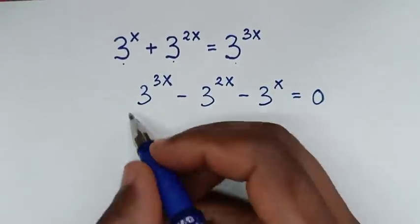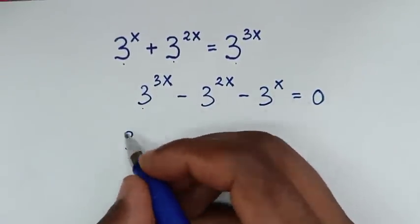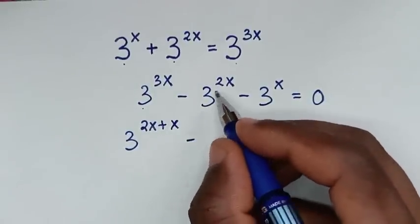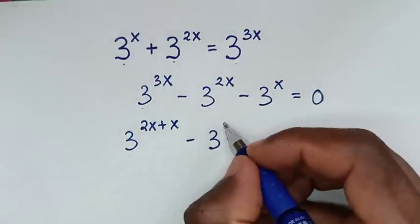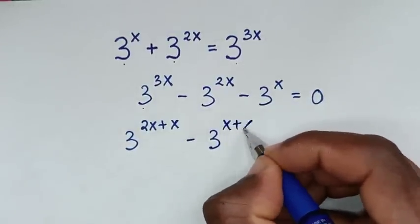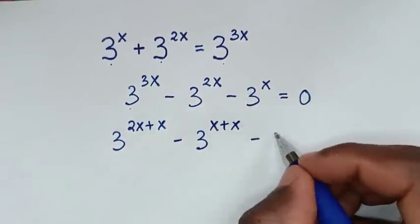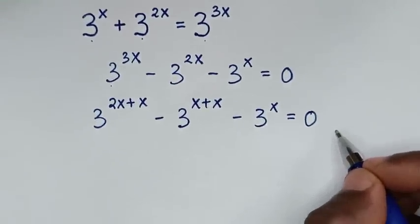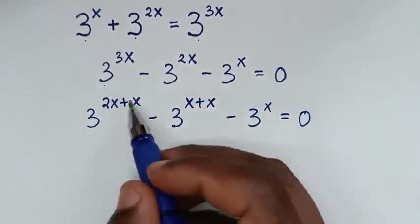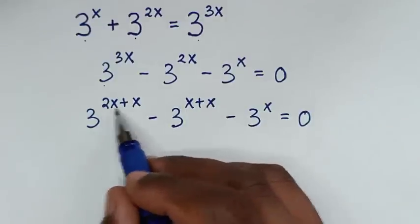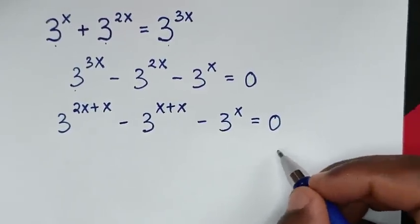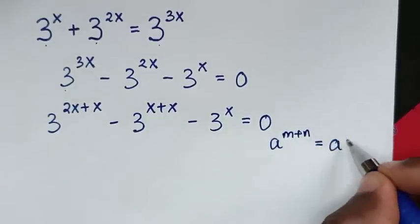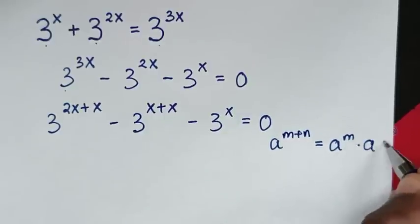In the next step, 3 power of 3x is the same as 3 power of 2x plus x, and 3 power of 2x is the same as 3 power of x plus x. We will apply the exponential rule which is a power of m plus n equals a power of m times a power of n.